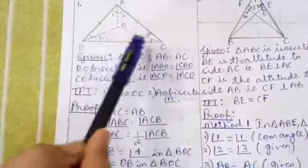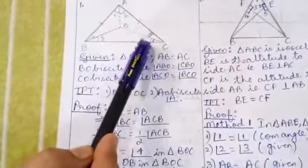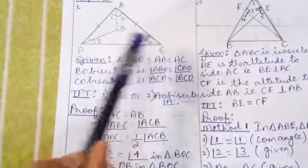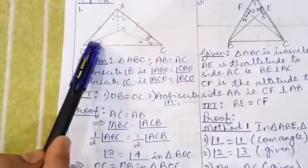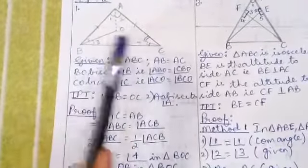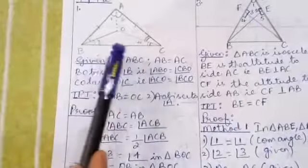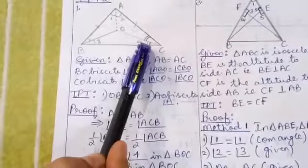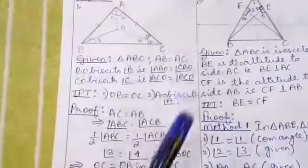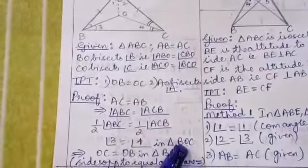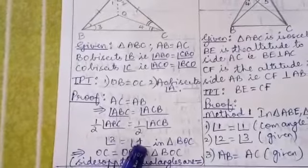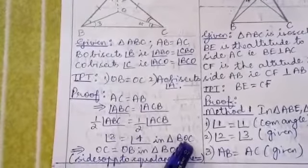Where are angles 3 and 4 found? They are in triangle BOC. So we have the result: angle 3 equals angle 4, in triangle BOC.